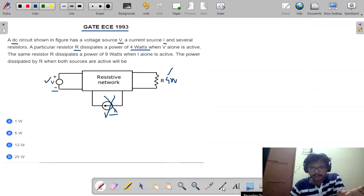Now in case 2, what they have mentioned? The same resistor R dissipates power of 9 watts when I is acting alone. What they have mentioned? Now there is no V, there is no voltage source. There is only a presence of current source. Now the same resistor will dissipate the power of 9 watts.